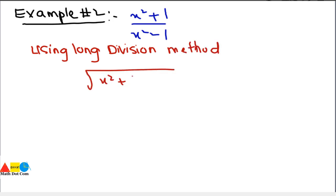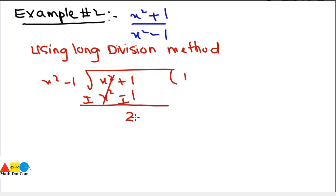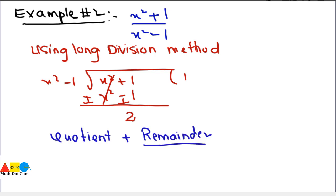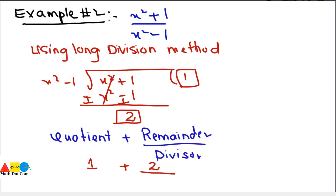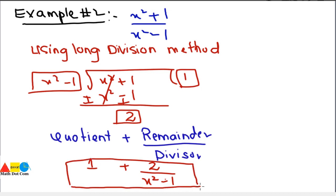Using the long division method with x² + 1 divided by x² - 1: we divide x² - 1 into x² + 1, subtract x² - 1, and we get a remainder of 2. Now it is in proper form. We write it as quotient plus remainder divided by divisor: 1 + 2 / (x² - 1). This is the proper form of the improper rational fraction. This is how you can convert an improper rational fraction into a proper rational fraction.